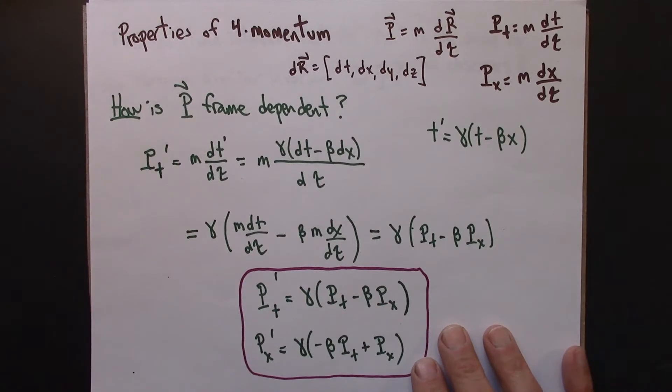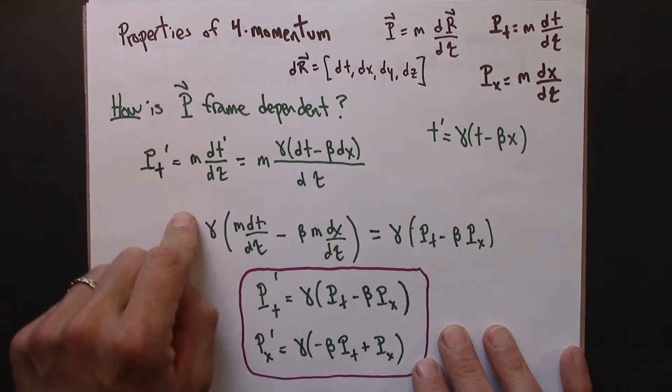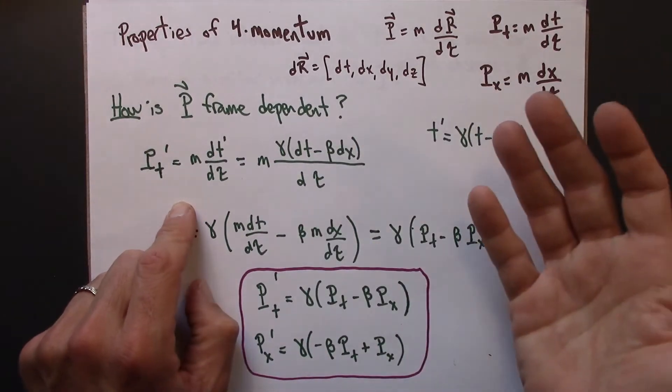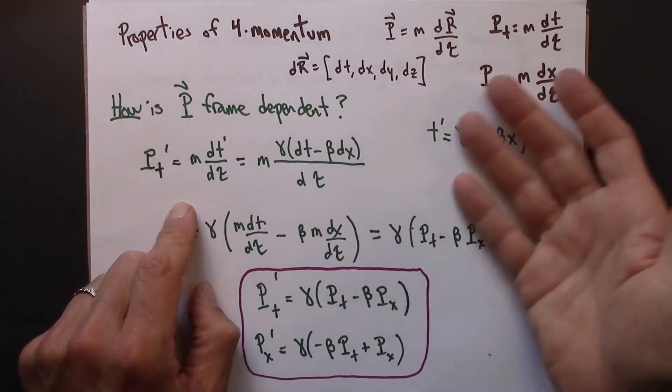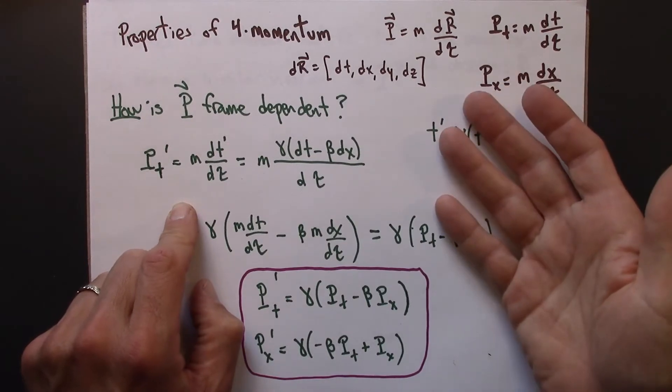So that means if you have space-time coordinates for an event in one reference frame, you follow a procedure, the Lorentz transformations, and figure out what those coordinates will look like in another reference frame.